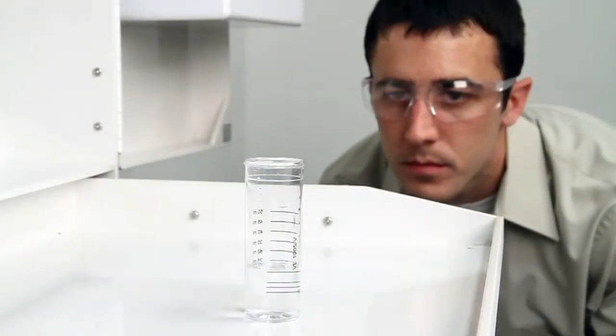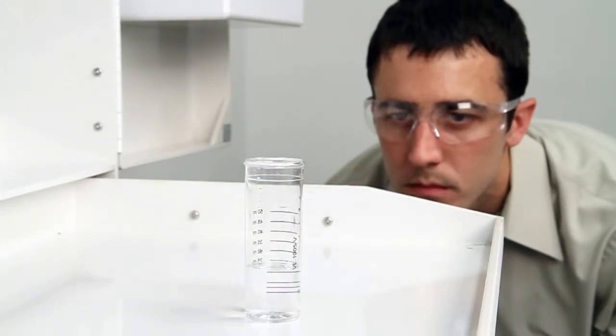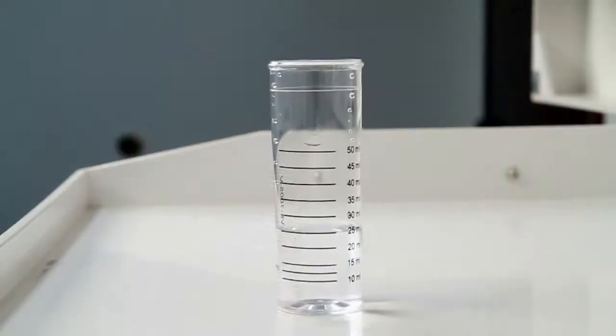When performing a drop count titration, a white background can provide contrast to better see the color changes. A cabinet tray or a white paper towel can provide that contrast.